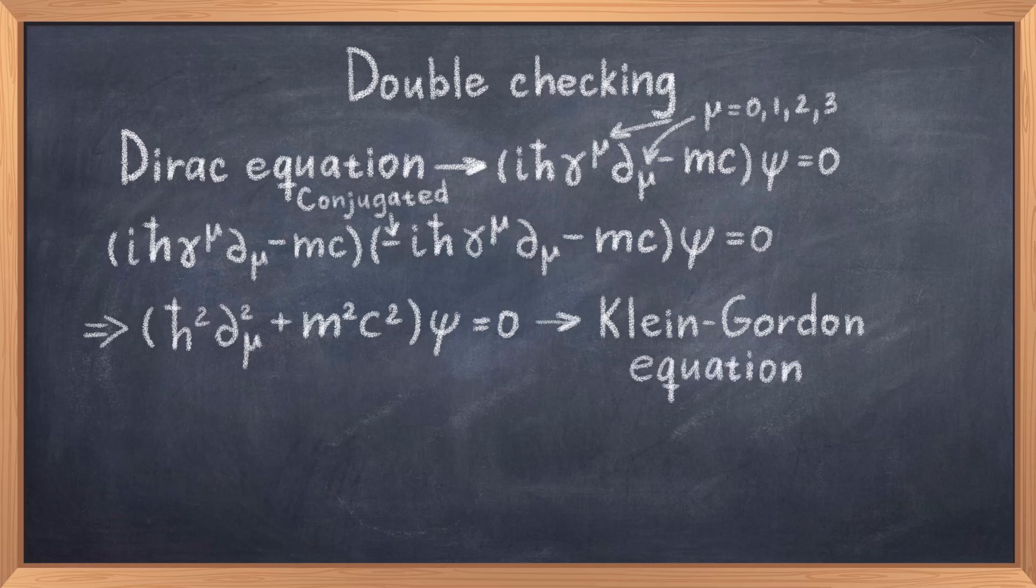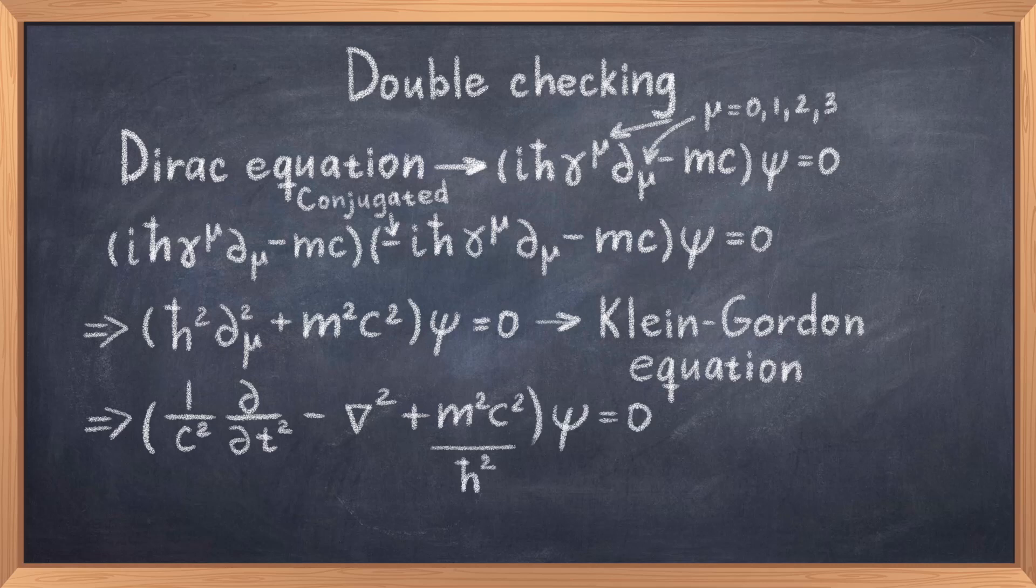minus i h-bar gamma mu partial derivative mu minus mc, and all that times psi is equal to zero. Multiplying everything together gives us h-bar squared, the partial derivative of mu squared, plus m squared c squared, and all that times psi is equal to zero, which is the Klein-Gordon equation. If we divide with h-bar and expand partial derivative of mu squared, we get the exact form as shown earlier in this video.